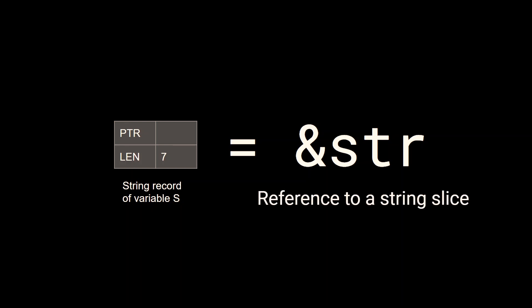In Rust, what we call the string record is referred to as str type, and represents a reference to a contiguous char array, along with its length. Technically, this is called a reference to a string slice.